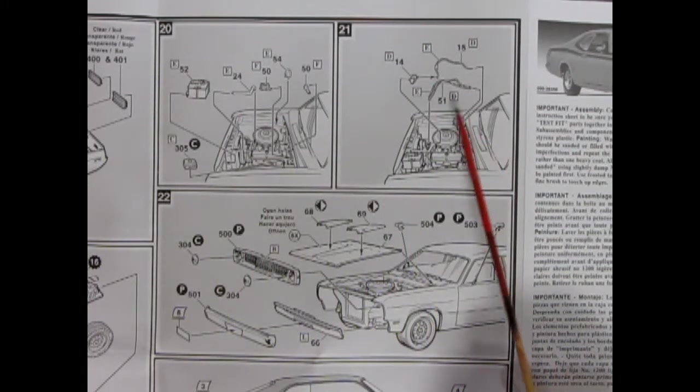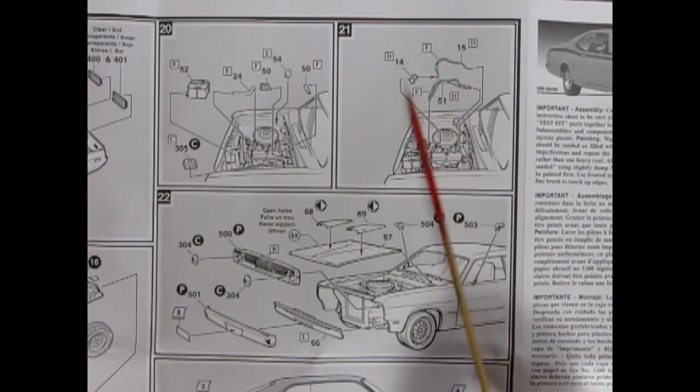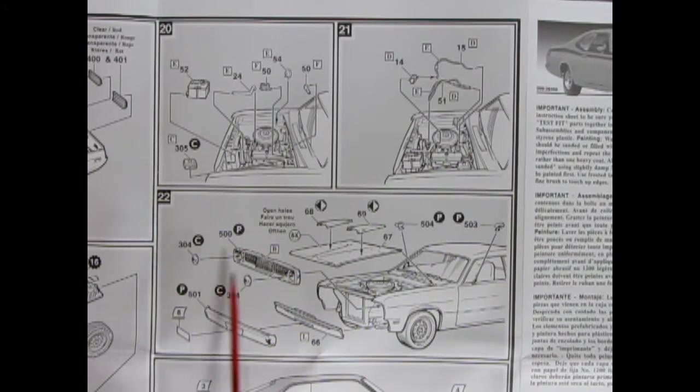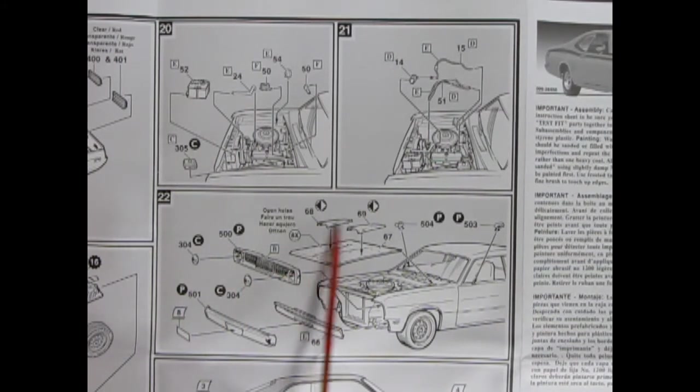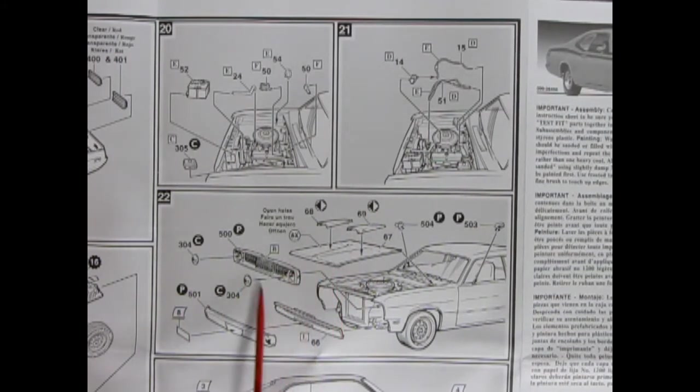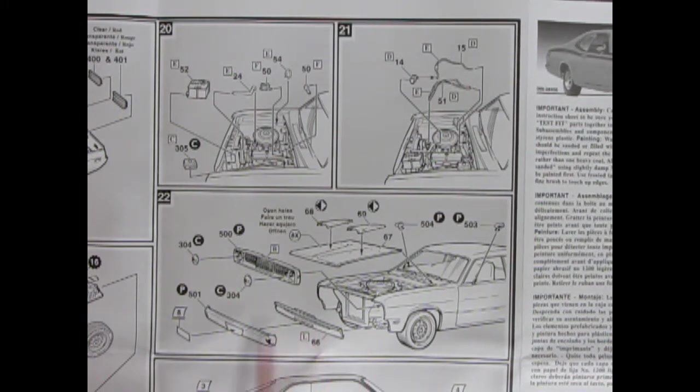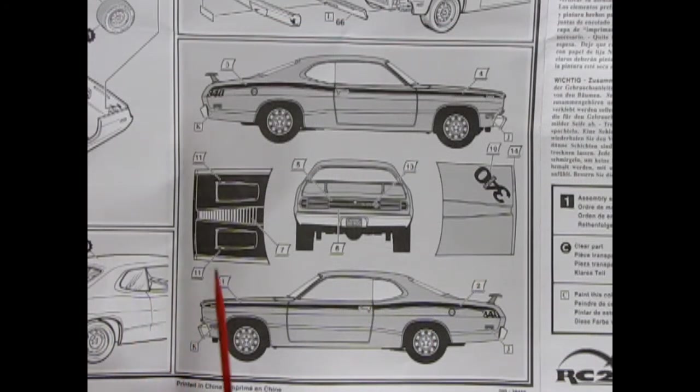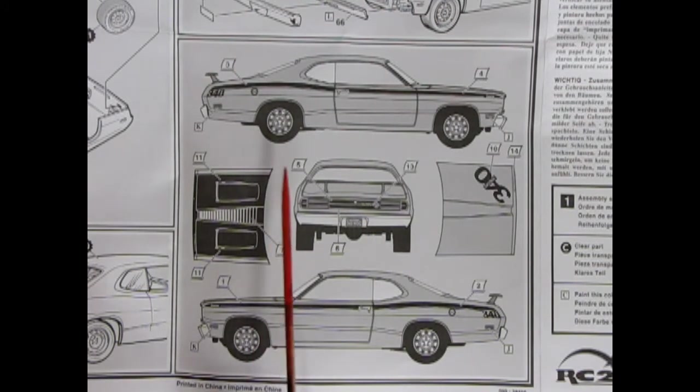And then here we've got all our different heater hoses for the air conditioner. And then in step 22, we've got the optional hood scoops you could put in, the front grille, the little splash pan here and our front bumper, as well as our side mirrors going in place.